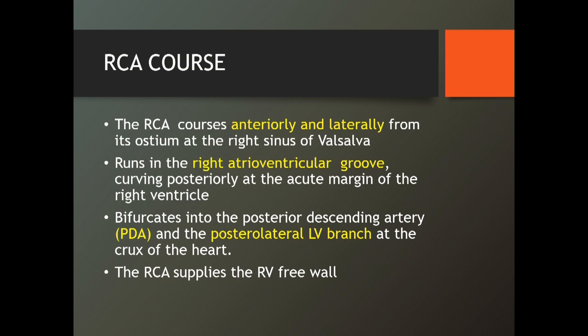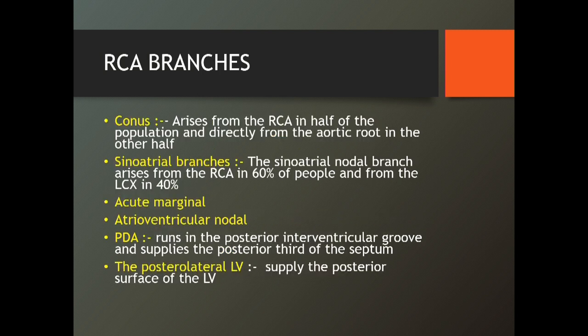RCA supplies the free wall of the right ventricle. What are the RCA branches? The first branch is the conus branch, which arises 50% of the time from the RCA, and the rest 50% comes directly from the aortic root — so you might see another branch coming from the aortic root next to the RCA. Then there are sinoatrial branches, which arise from the RCA in 60% of patients and from the circumflex artery in 40%. Then acute marginal, atrioventricular nodal, PDA, and posterior lateral branches.